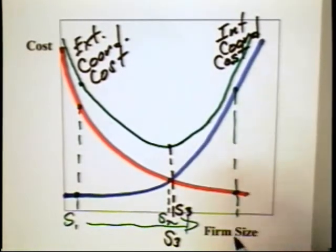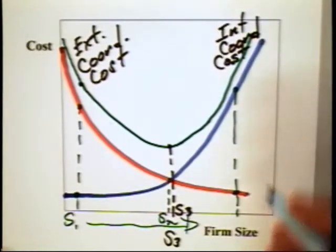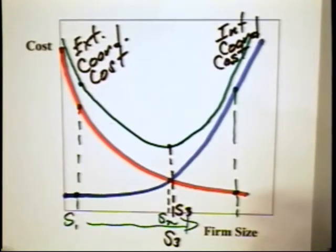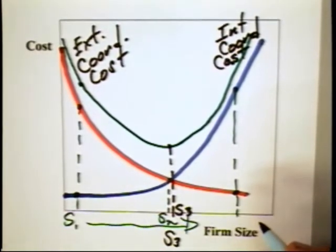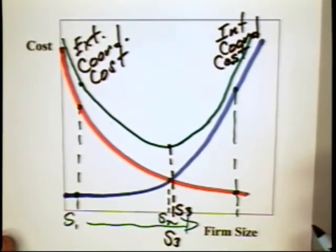Now these curves can be useful to consider changes in the underlying cost functions. Let's suppose that the internal coordinating costs go down. This can be because of new technology. That is, we've developed computer monitoring systems that allow for producers to keep track of what their employees are doing and hence they can exact penalties on those people who are shirking or misusing and abusing resources.